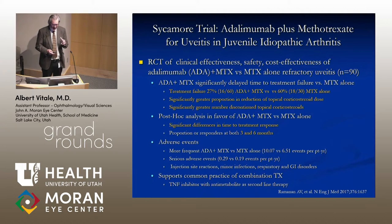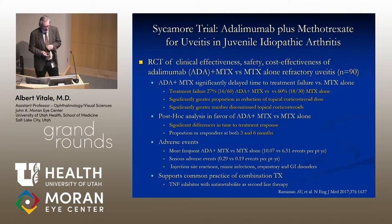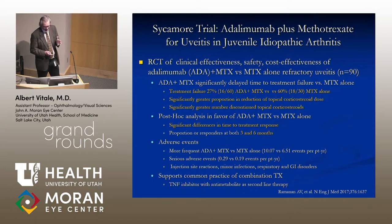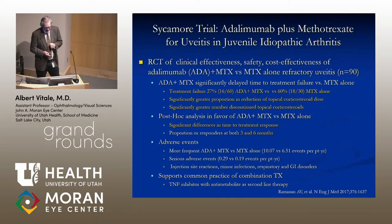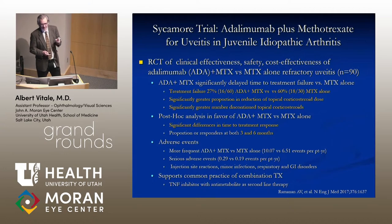I want to draw attention to the SYCAMORE trial, which was a randomized controlled trial concluded a year ago — concluded early — of the clinical effectiveness and cost-effectiveness of adalimumab plus methotrexate versus methotrexate alone in a large cohort of patients with JIA uveitis. It showed a definitive advantage in terms of efficacy and time to treatment failure for the combination of drugs rather than either drug alone, which supports the common clinical practice of using these drugs in combination.